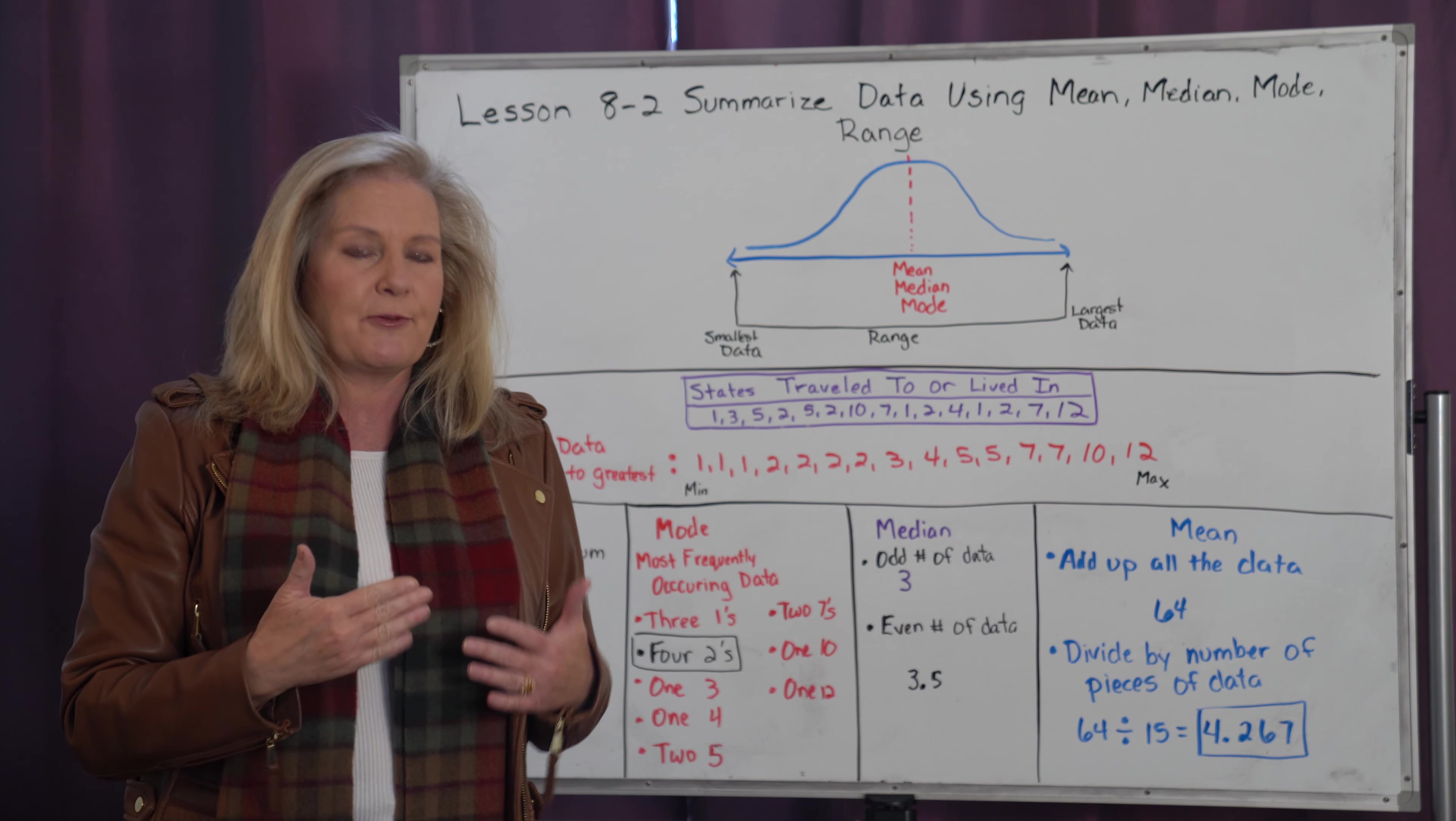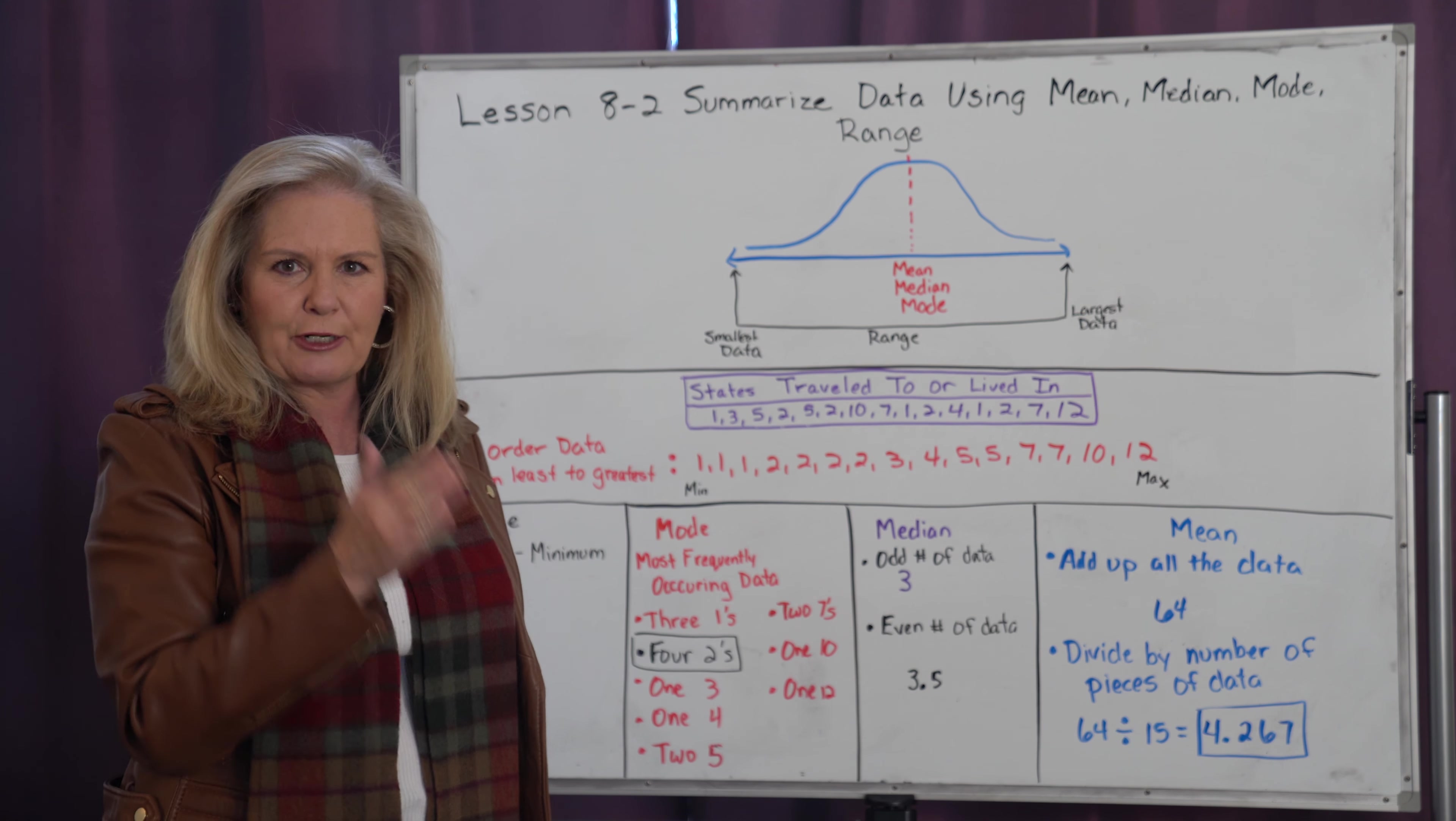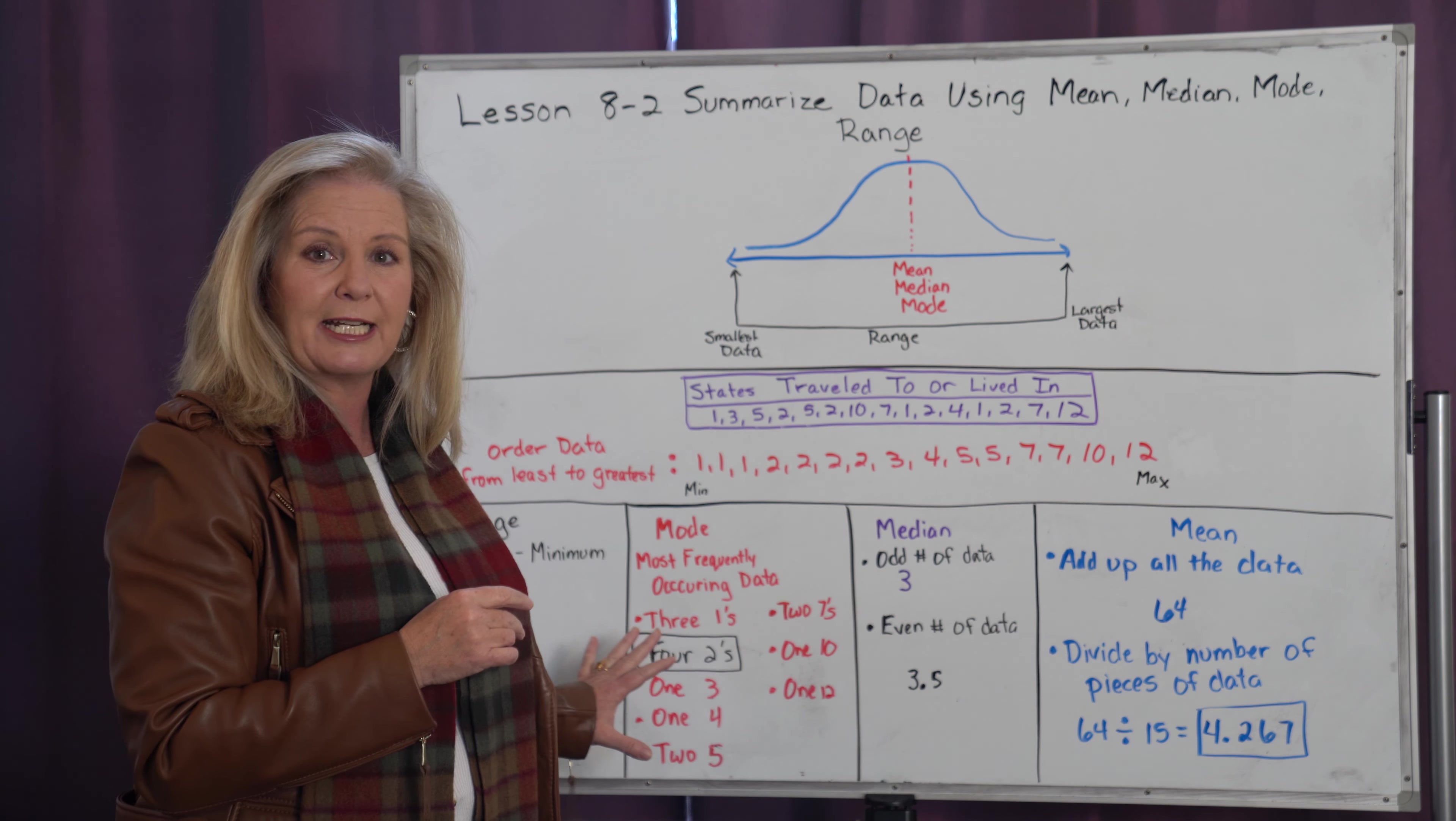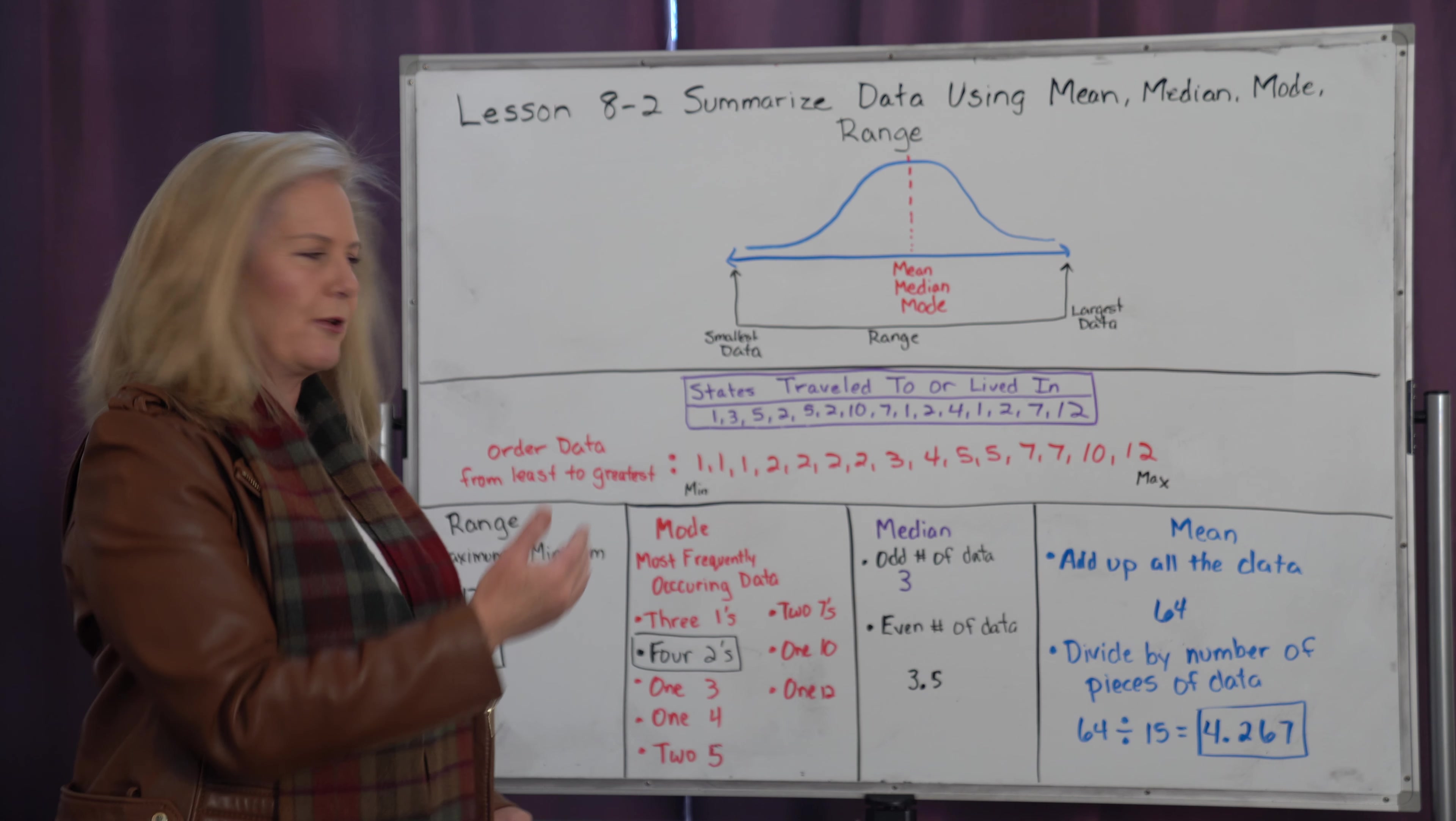Now it's time to analyze this data. First, I want to organize it. Always when you're working with any of these statistical measures of central tendency, you want to order your data from least to greatest. If we do that as our first step, it sets us up for everything we're going to need to do. When I order my data, my smallest pieces of data are on the end to the left, and my largest pieces are on the end to the right.